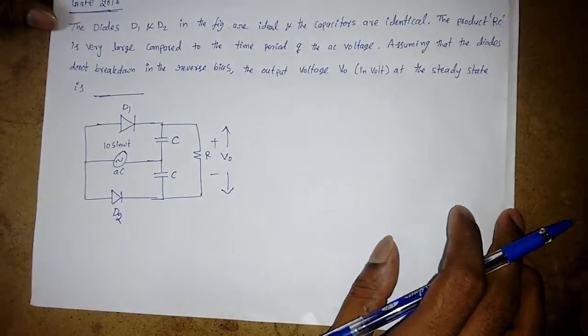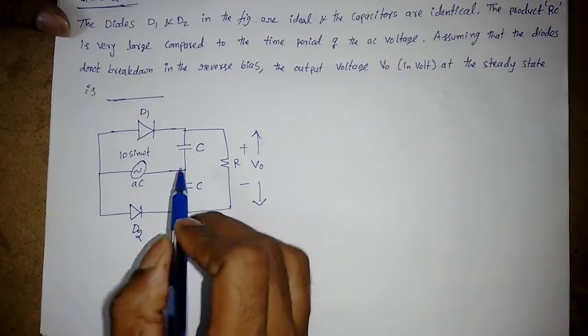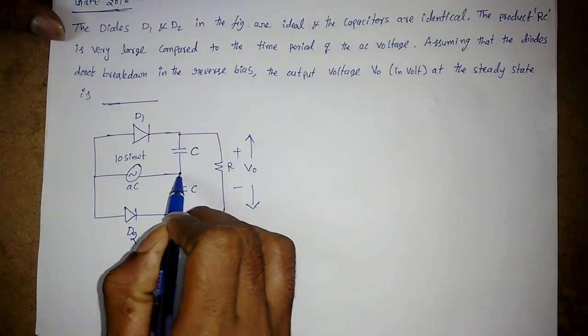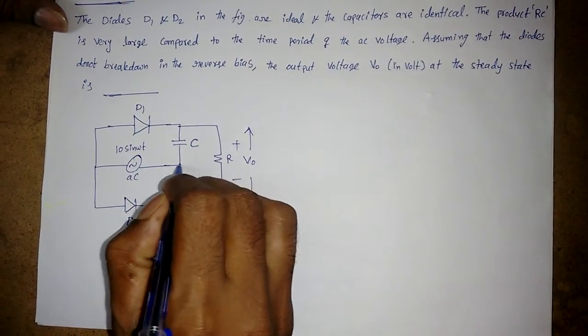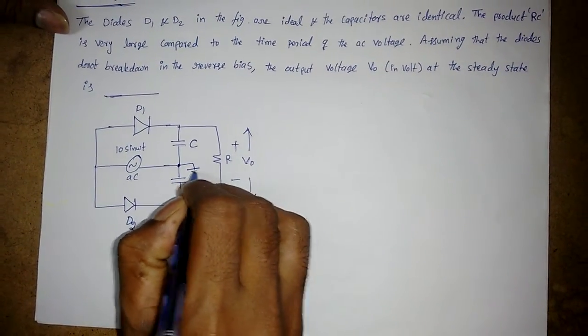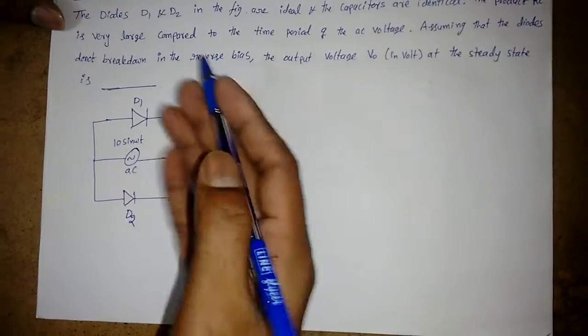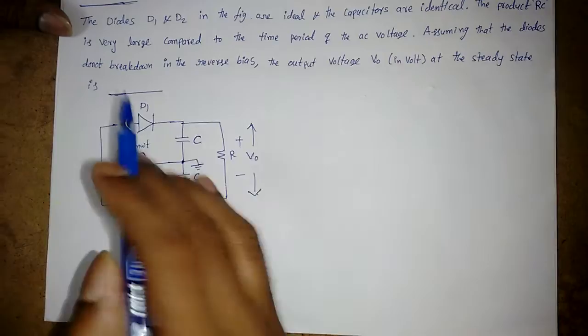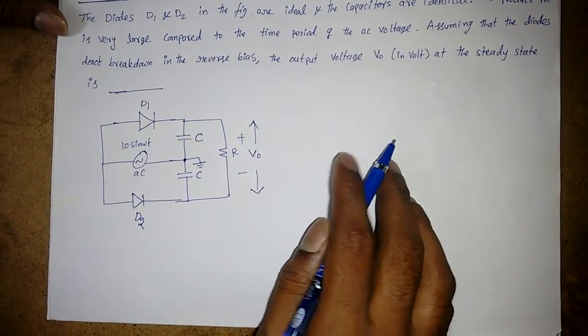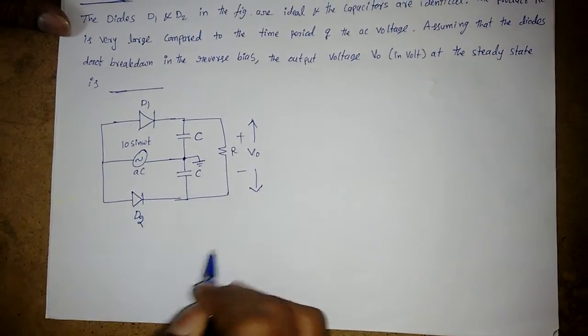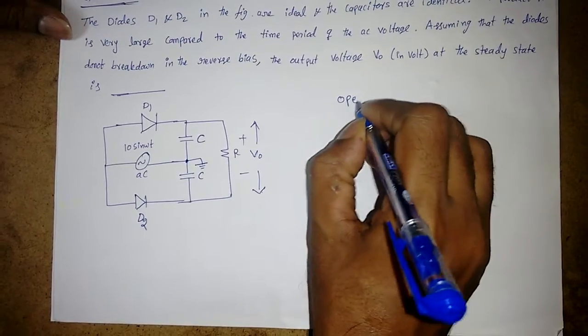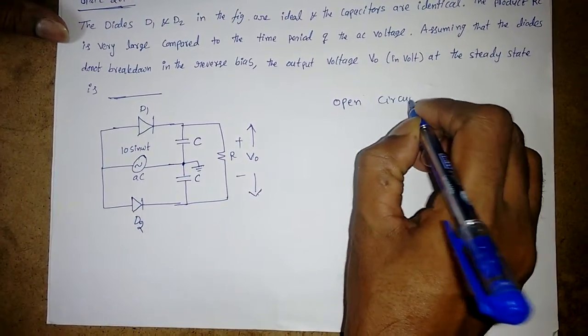When you want to solve this type of problem, first make the common terminal which is grounded. Whenever it is in reverse bias and it does not break down, it will be simply open circuit. For this type of problem, open circuit method is very useful.